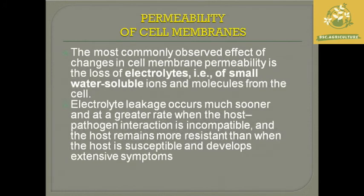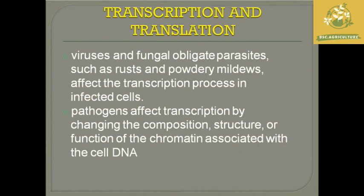Regarding permeability of cell membranes affected by plant pathogenic infections, the most commonly observed effect of changes in cell membrane permeability is the loss of electrolytes — small water-soluble ions and molecules. Electrolytic leakage occurs much sooner and at a greater rate when the host-pathogen interaction is incompatible and the host is more resistant. When the host is susceptible, it develops extensive symptoms — first intensive damage occurs, and only when the host plant is susceptible does it show extensive symptoms.